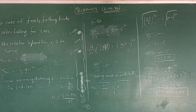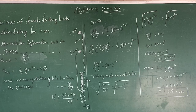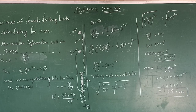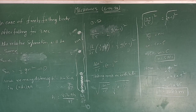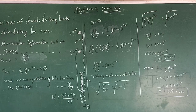In the case of freely falling bodies, both bodies follow the same conditions. First condition: initial velocity u is equal to zero. Second condition: both are accelerating with acceleration equal to g — that is, a is equal to acceleration due to gravity.